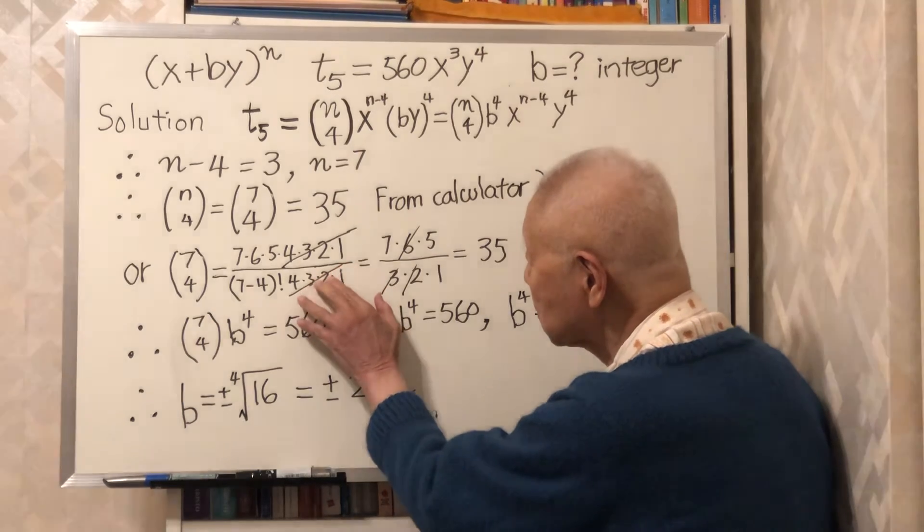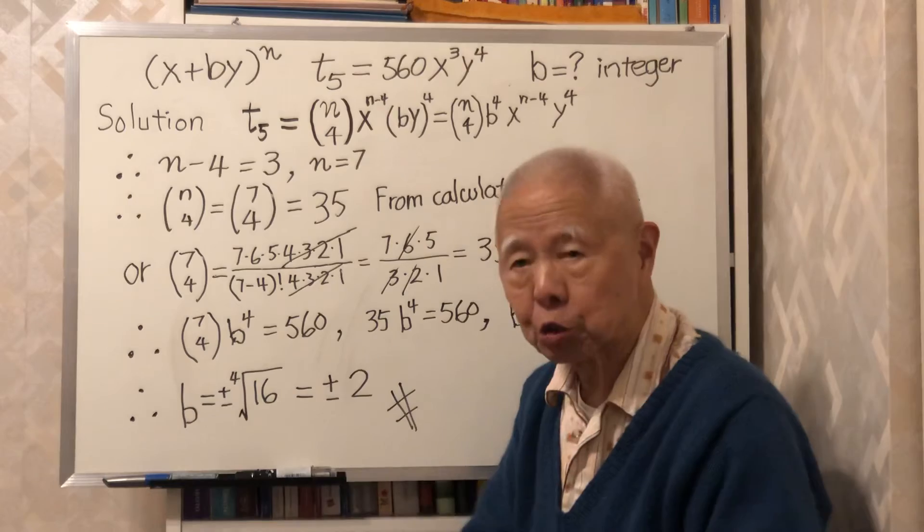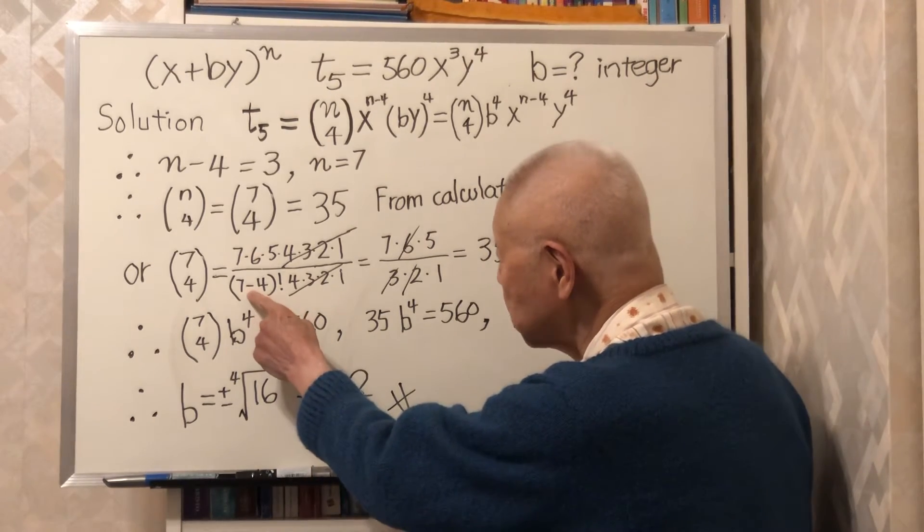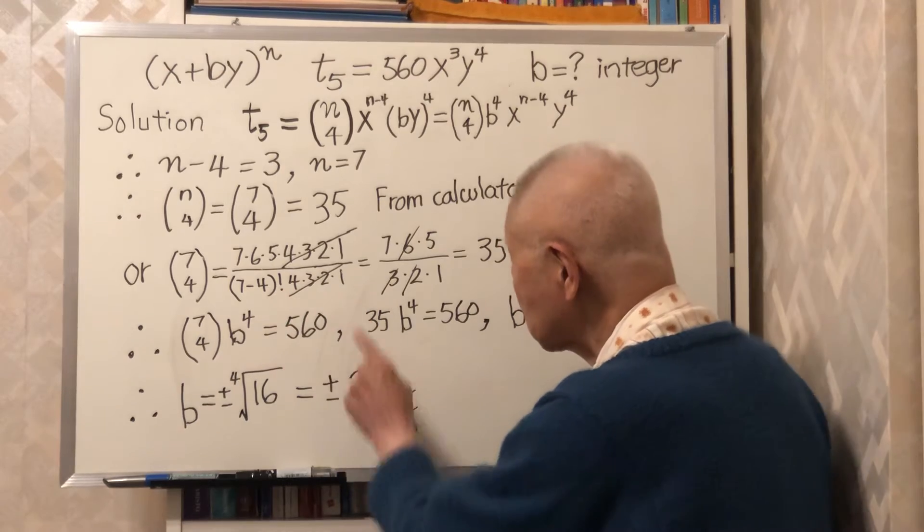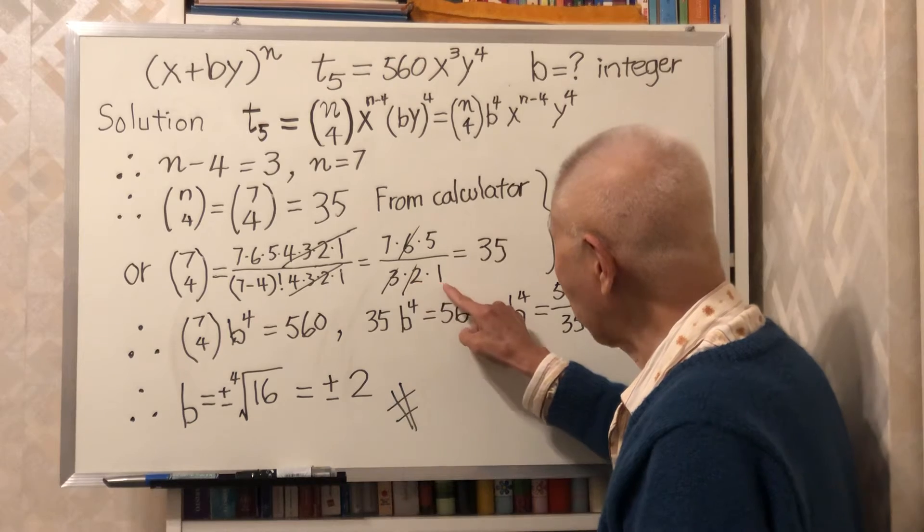So this part, this part, and this part cancel each other. What you are left is 3 factorial here. What is 3 factorial? 3 times 2 times 1.